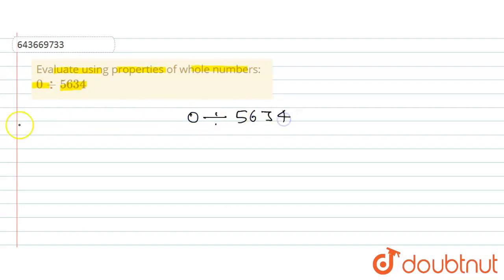As we know that, my dear students, if zero divided by any number, let's say a, so the resultant number will also be zero. Okay, so here we have only apply this: that is zero divided by 5634.